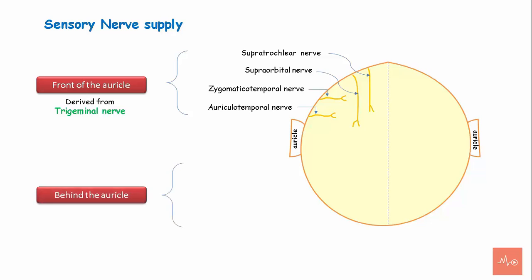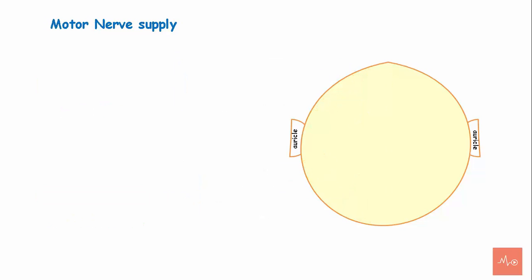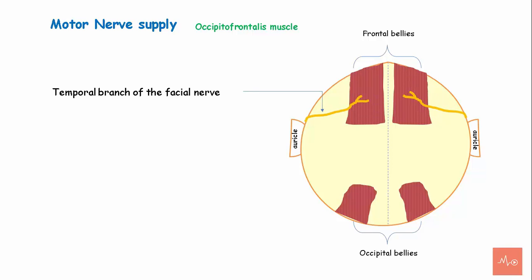Behind the auricle, the scalp receives nerve supply from the greater auricular nerve, lesser occipital nerve, greater occipital nerve, and the third occipital nerve. Motor supply to the scalp is for the occipitofrontalis muscle: the frontal bellies are supplied by the temporal branch of the facial nerve, while the occipital bellies are supplied by the posterior auricular branch of the facial nerve.